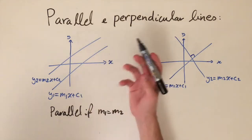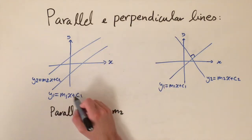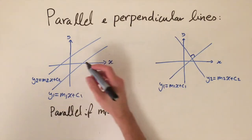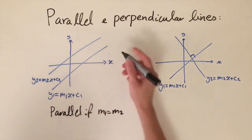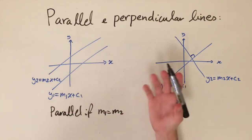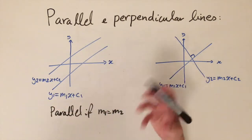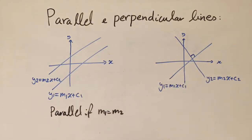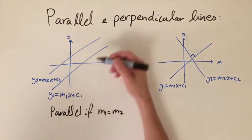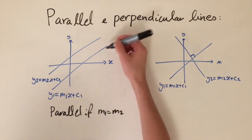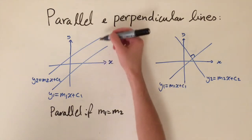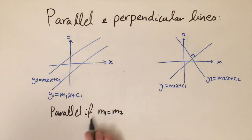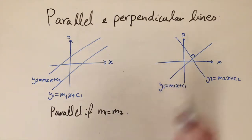In general we talk about parallel lines that are not on top of each other. There is a special case where if c1 and c2 are equal they would be the same line, which is technically parallel to itself, but in general we're considering lines that aren't equal — so the only condition is that they have the same gradient.